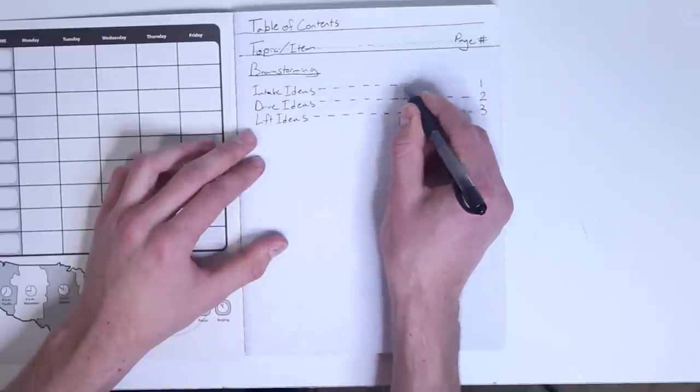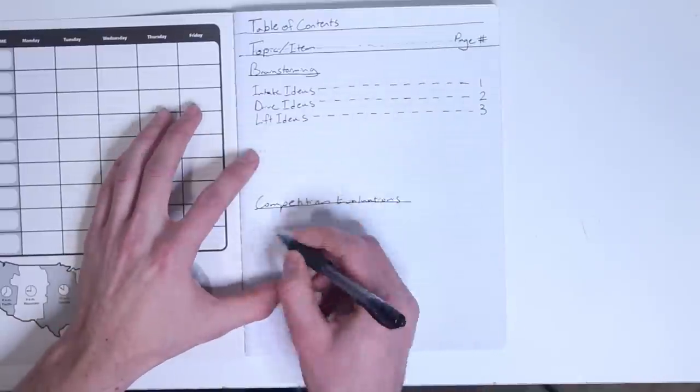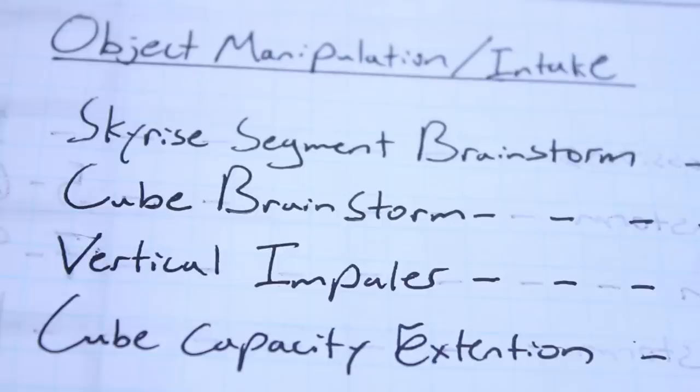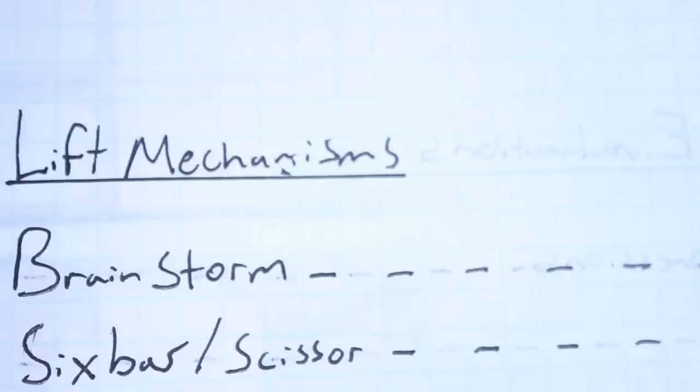You can organize your table of contents most any way you want. Many teams choose to simply list pages chronologically, but if you want to get fancy, you can try adding subheadings. Update the table of contents as you add material.